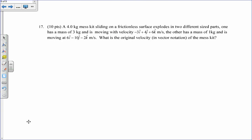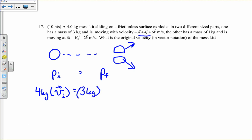A 4-kilogram mess kit sliding on a frictionless surface explodes into two different sized parts. So I have this mess kit traveling along, and then it explodes into two pieces going in different directions. I want to know its original velocity of the mess kit. So I say my initial momentum equals my final momentum. My initial momentum is the mass, 4 kilograms, times vi. And it's going to equal the final momentum, which is 3 kilograms times its velocity, minus 3i plus 4j plus 6k, plus 1 kilogram, 6i minus 10j minus 2k.